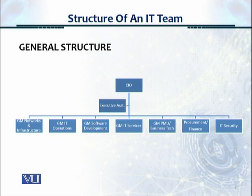The general structure is broken up into about six different types of resources shown in a diagram. If this diagram is not very clear, you have these slides in your course material as well. There are six types of heads of departments reporting to the CIO. The first one is for networks and infrastructure, and looks after the networks and the data center infrastructure.